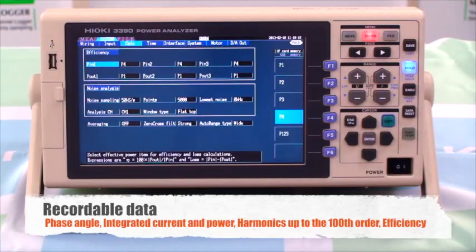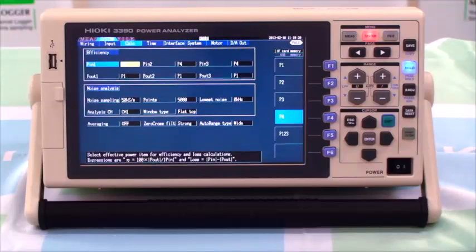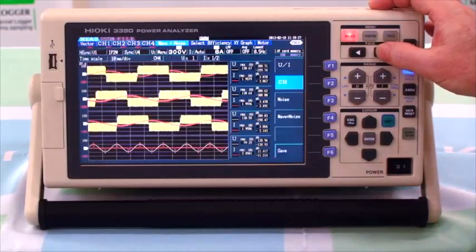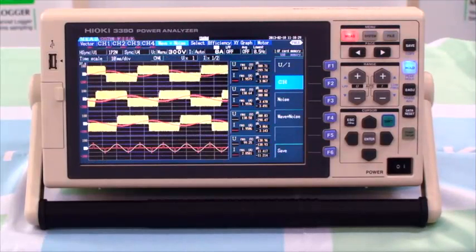and harmonics up to the 100th order and efficiency. A waveform and noise display screen is also available offering an opportunity to see the voltage and current waveforms and their noise characteristics together on the same screen.